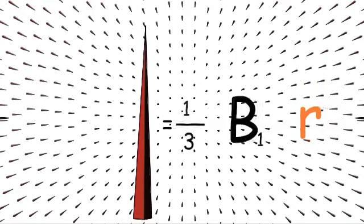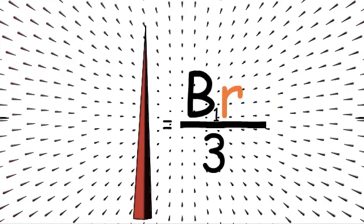We will be numbering the bases so we start with base 1 and our equation is base 1 r over 3.